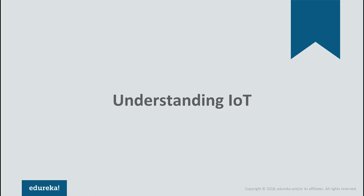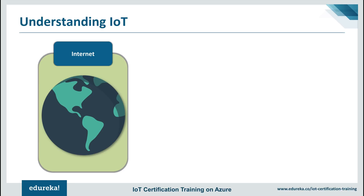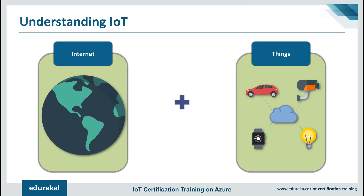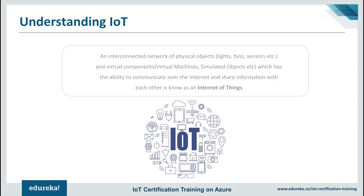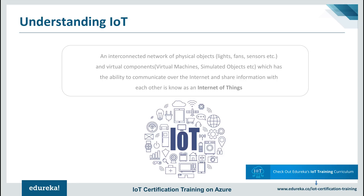What do you understand by the term internet? The internet is basically a network formed by connecting computers globally — it provides data highways to share information over the network from one place to another. When you expand the capability of the internet from connecting computers globally to connecting several small electronic devices, the Internet of Things is formed. According to IBM, IoT is the concept of connecting any device to the internet and to other connected devices — a giant network of connected things and people, all of which collect and share data about how they are used and about the environment around them.